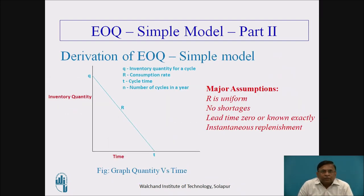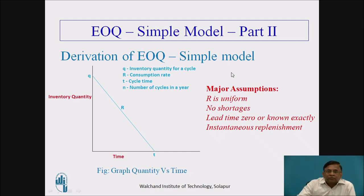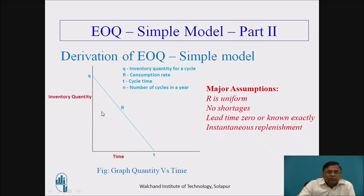Coming to the derivation steps, this is a very simple model for EOQ derivation. The assumptions are mentioned here along with the main terms we need in the derivation. Q is the quantity, and T on the horizontal axis indicates the time scale. The triangle represents one particular inventory cycle, and the slant line is R, that is the consumption rate.